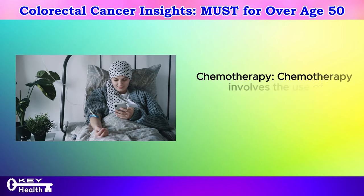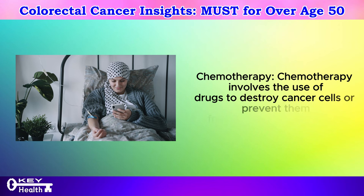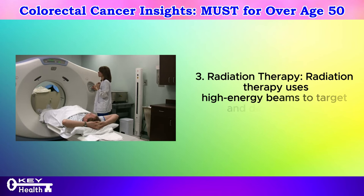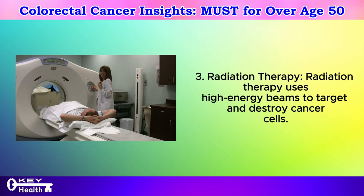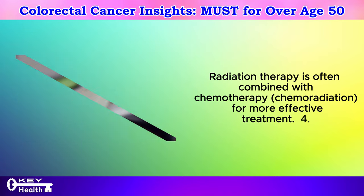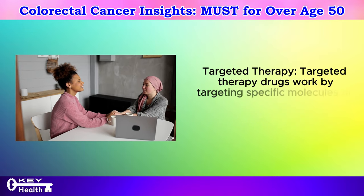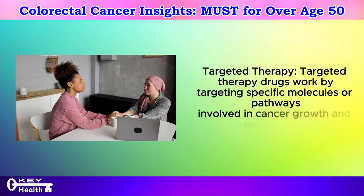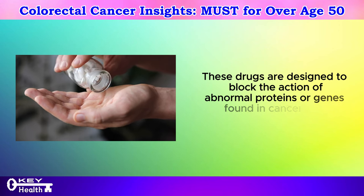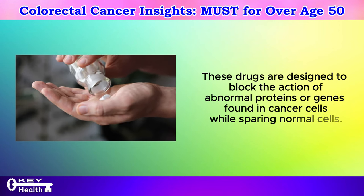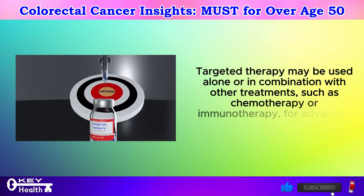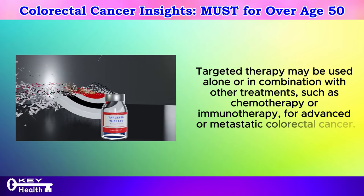Treatment option 2: Chemotherapy involves the use of drugs to destroy cancer cells or prevent them from growing and dividing. Treatment option 3: Radiation therapy uses high-energy beams to target and destroy cancer cells, and is often combined with chemotherapy — chemoradiation — for more effective treatment. Treatment option 4: Targeted therapy. Targeted therapy drugs work by targeting specific molecules or pathways involved in cancer growth and progression, blocking the action of abnormal proteins or genes in cancer cells while sparing normal cells. Targeted therapy may be used alone or in combination with other treatments for advanced or metastatic colorectal cancer.